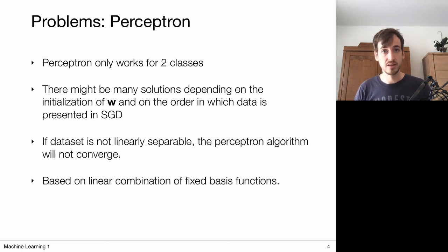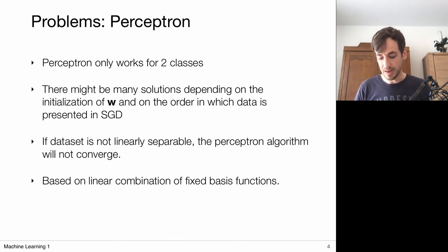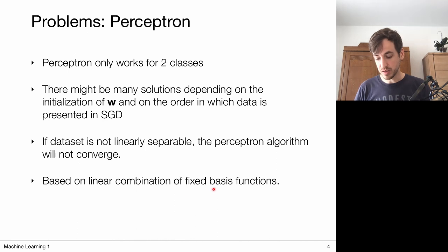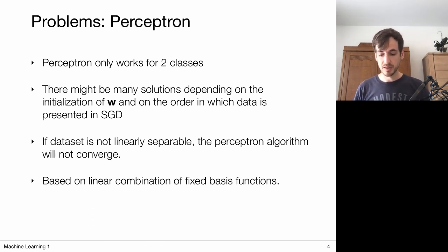A final remark: this actually applies to all methods discussed so far using basis functions — we have to define the basis function, and in higher dimensional cases it's really hard to decide what kind of basis functions to use and how many. This limitation applies to other methods as well, and it is one we're going to solve in an upcoming video, where we'll actually learn the basis functions as part of the learning process. We're going to do this in the multi-layer perceptron algorithm. The perceptron belongs to this class of discriminative methods — it has a very elegant algorithm, but there are some limitations to it.